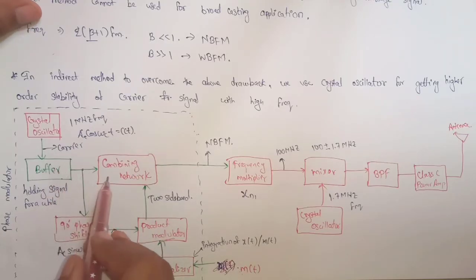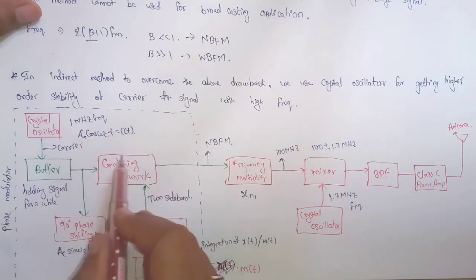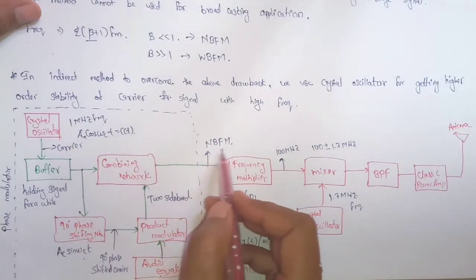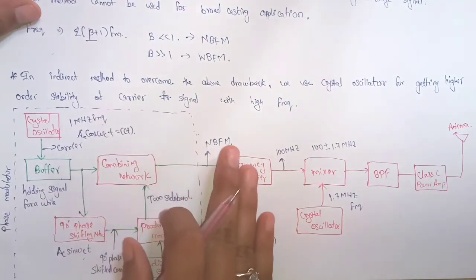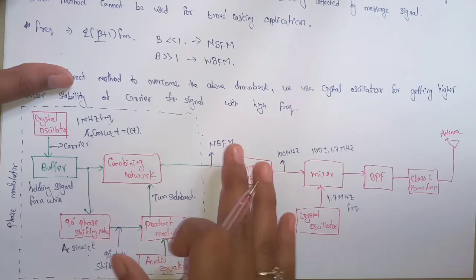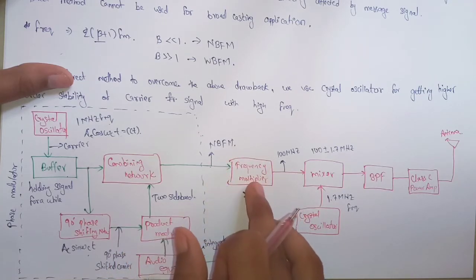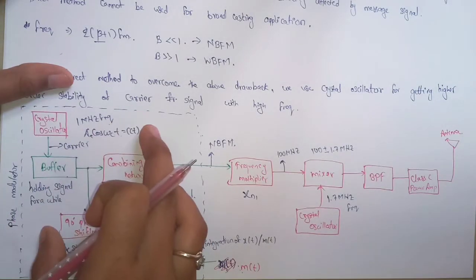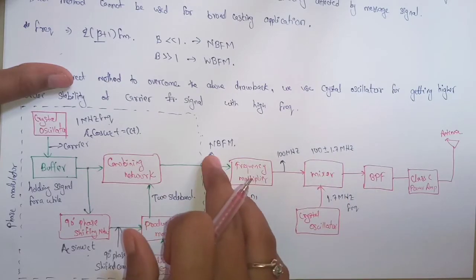At the product modulator, we have the integrated message signal and the 90-degree phase shifted carrier signal. The unshifted carrier signal goes to the combining network. The product modulator gives a double sideband signal, and both signals combine to give the narrow band FM signal. This entire network is just a phase modulator for generation of narrow band FM.